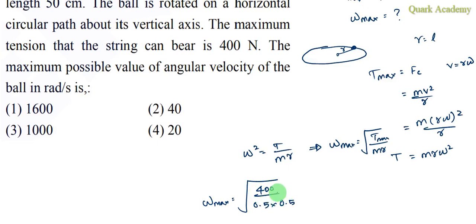r is the length of the string, which is 0.5 meters. So this is the square root of 400 divided by 0.5 times 0.5, which equals 40. So option 2 is the correct answer.